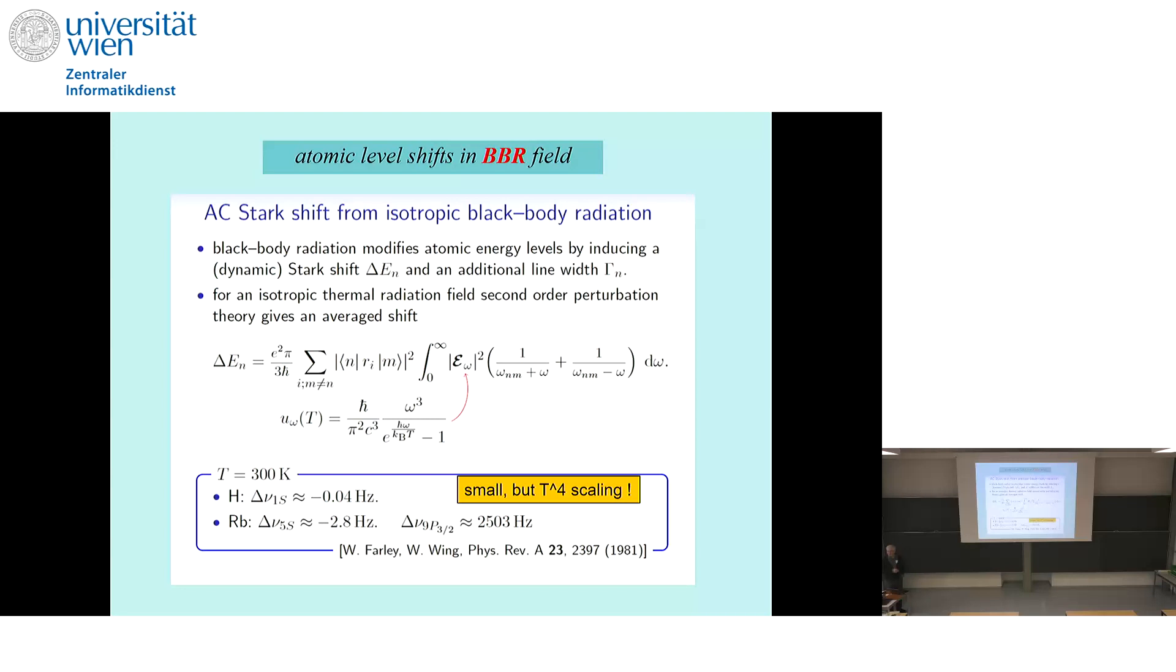If we look at hydrogen at 300 Kelvin, the ground state shift is very small, 0.4 Hertz. In rubidium, it's almost 100 times bigger, but it's still a quite small shift. But if it's 10 times hotter, we have four orders of magnitude bigger shifts, so it can be something. And for higher lying states, as we have heard before, this shift is bigger.